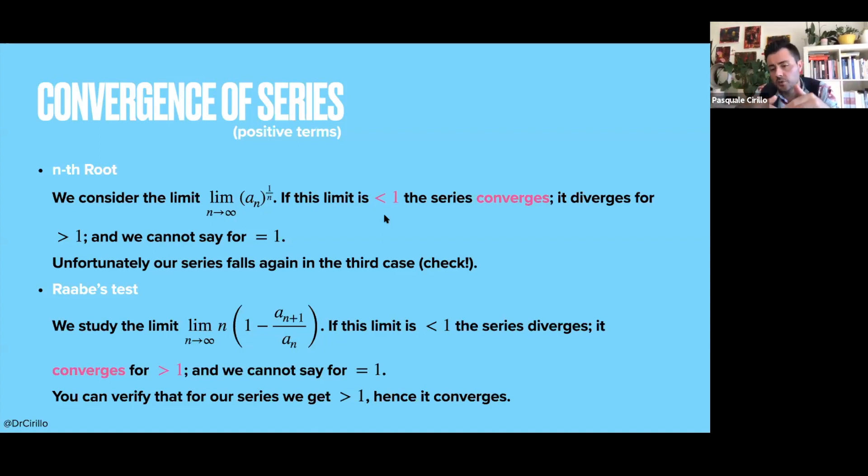If there is convergence, you get a limit which is larger than one. Again, I leave to you the exercise, which is also a nice exercise to refresh a little bit limits. But you can verify that the limit that you get here is larger, larger than one. And so you have convergence. Okay. So this is a convergent series.